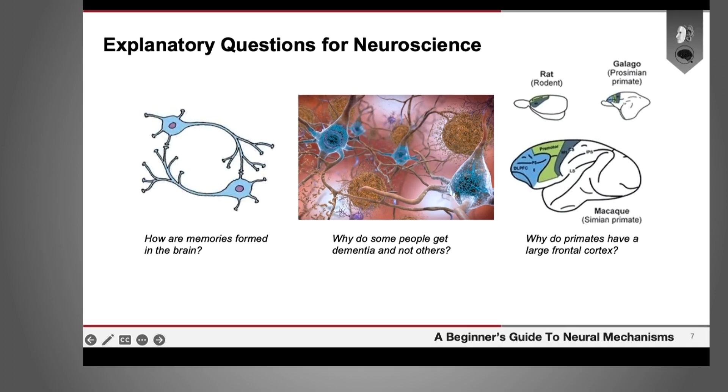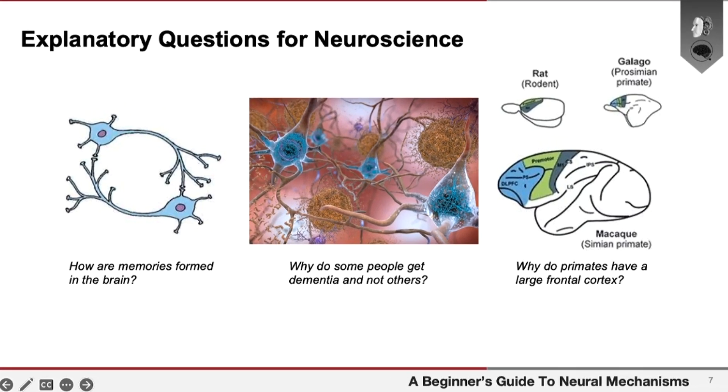So there are many explanatory questions that neuroscience can pose itself and also try to answer. A question that neuroscientists might ask themselves is how are memories formed, why do some people get dementia and not others, and why the frontal cortex is larger in primates than in other animals.